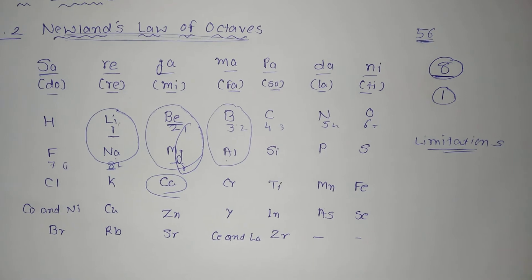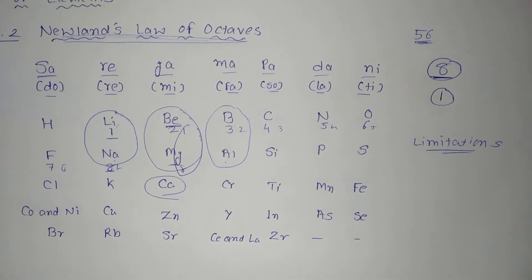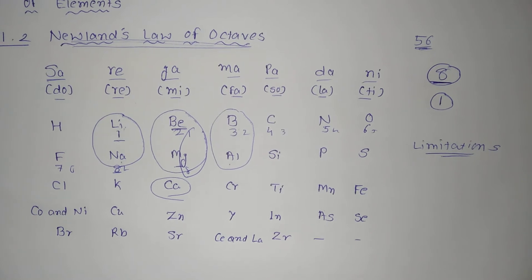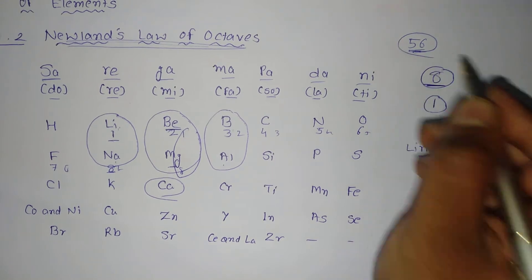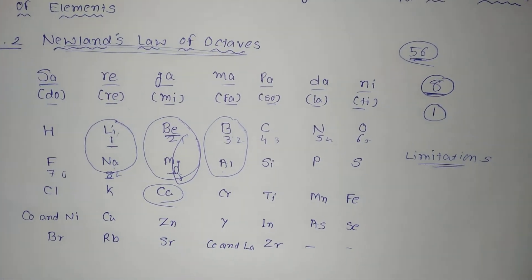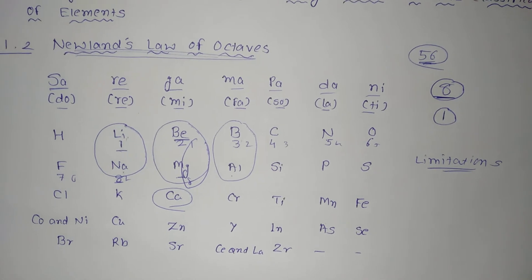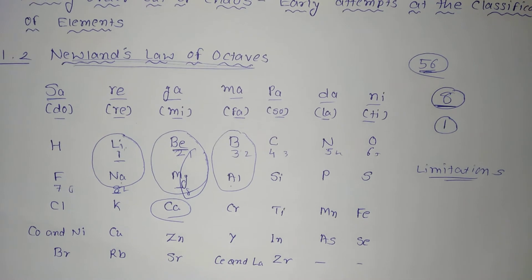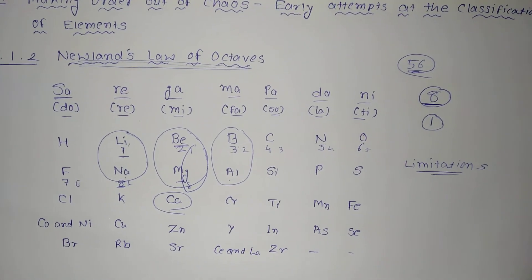The second limitation: Newland assumed that only 56 elements existed in nature and no more elements would be discovered in the future. But later on, several new elements were discovered whose properties did not fit into the Law of Octave. We know that right now there are 118 elements present in the periodic table. So, his assumption that no element would come after 56 was his second limitation.